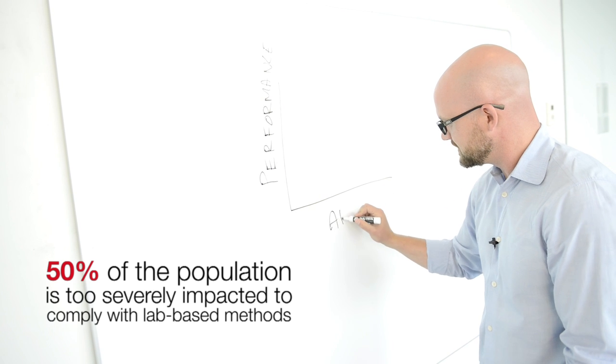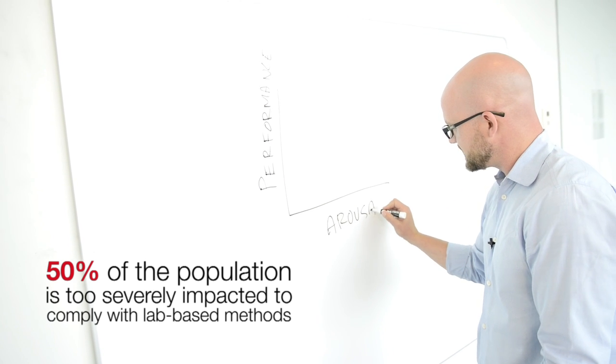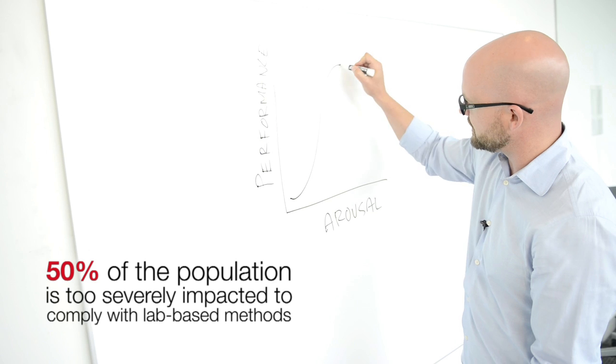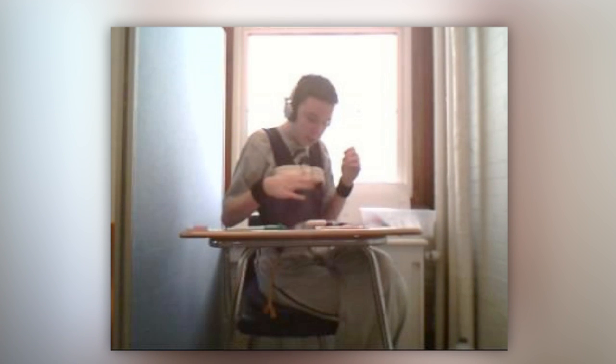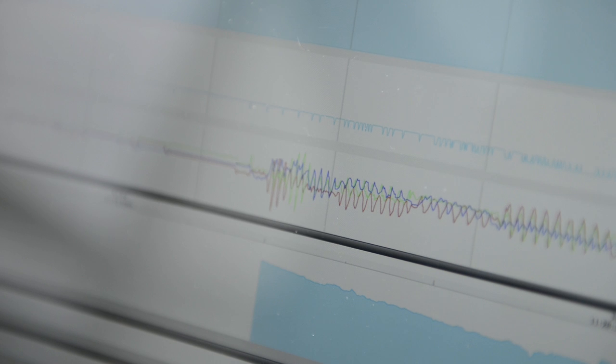About 50% of the population with autism is too severely impacted to comply with laboratory-based methods. So in these natural environments like the home and classroom, we instrument spaces with video and microphones. We also put sensors on individuals with autism that record their physical activity.